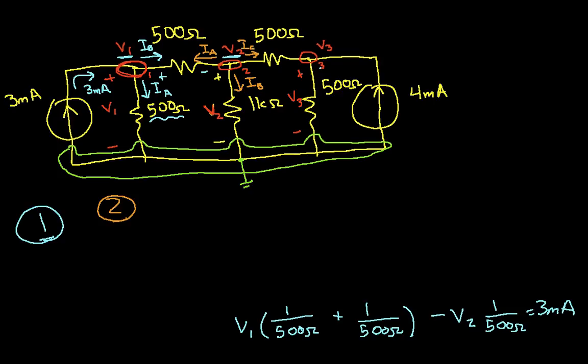So applying Kirchhoff's current law tells me that IA plus IB plus IC equals zero. Now IA is going to be the current through this 500 ohm resistor going from this positive to this negative. You'll notice that I've relabeled the voltage for my orange IA. That's fine; there's no problem in doing that as long as you're clear on what you're doing. So IA is going to be V2 minus V1, that's the voltage at node 2 minus the voltage at node 1, which is the voltage across this resistor, divided by 500 ohms.